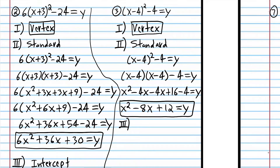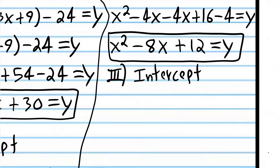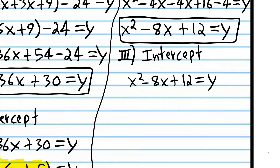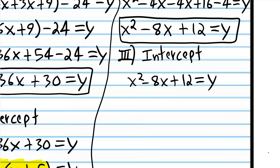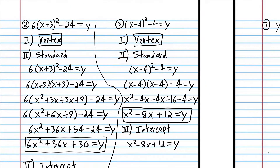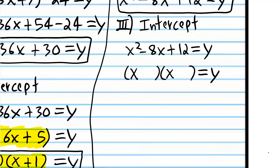Now we're going to convert from standard form to intercept form, starting from standard form — the easiest way to do it. We don't have a coefficient here, so there's no common factor other than 1 to factor out. We can just go ahead and factor directly: what two numbers multiply to 12 and add up to negative 8? That's negative 2 and negative 6. Negative 2 times negative 6 is positive 12, and negative 2 plus negative 6 is negative 8. So that is intercept form.